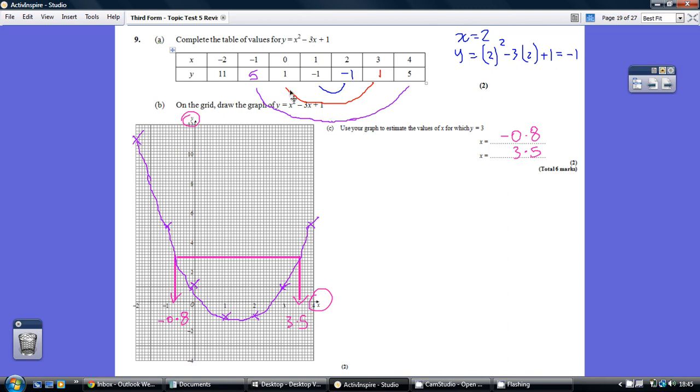So the 1 matches with that 1, and that 5 matches with that 5. Plotting gives us a smiling face, and taking our two readings we get about minus 0.8 and 3.5.